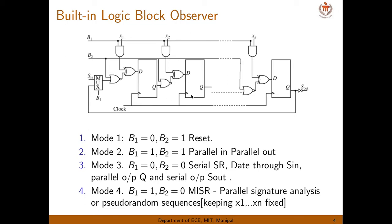Mode 2 has B1 equal to 1 and B2 equal to 1. Since B2 equals 1, the NOR gate output is 0, making that input a don't care. Since both B1 and B2 are 1, all AND gates are enabled and you can feed data x1 through xn. So each flip-flop gets its corresponding input: D1 gets x1, D2 gets x2, and Dn gets xn. This is parallel-in parallel-out operation.